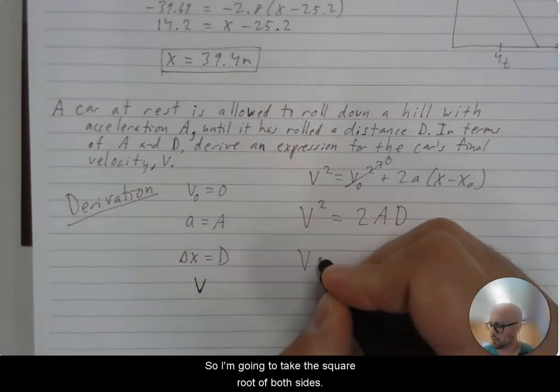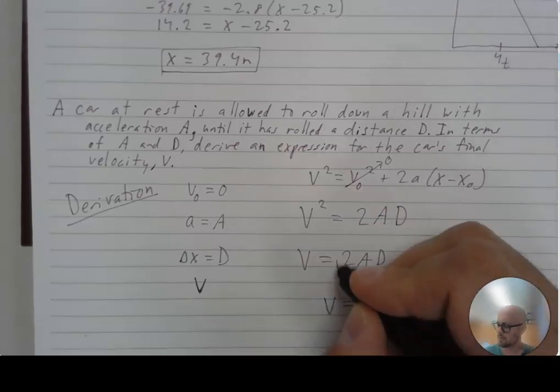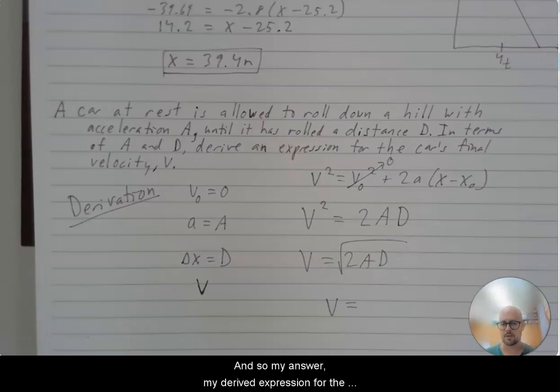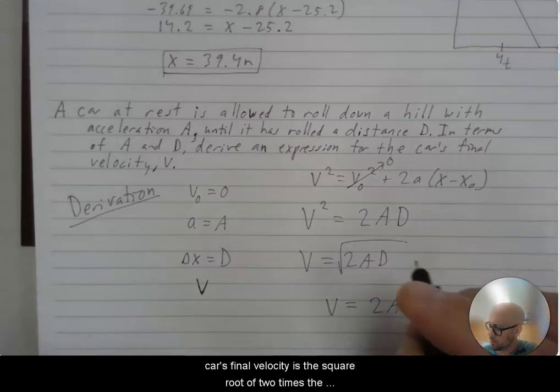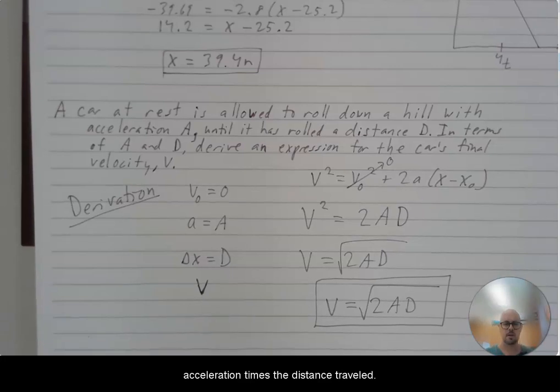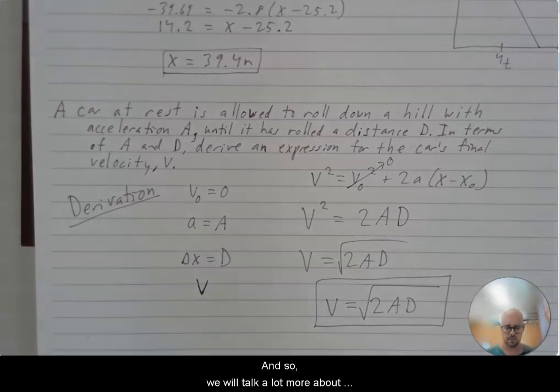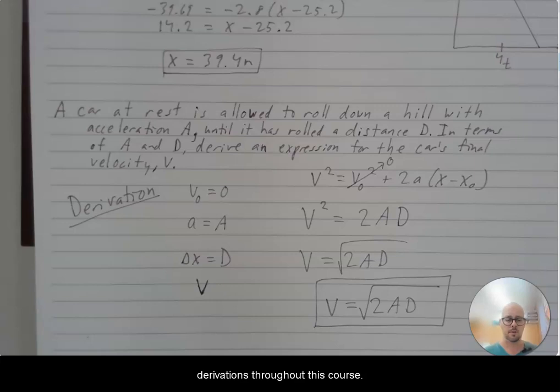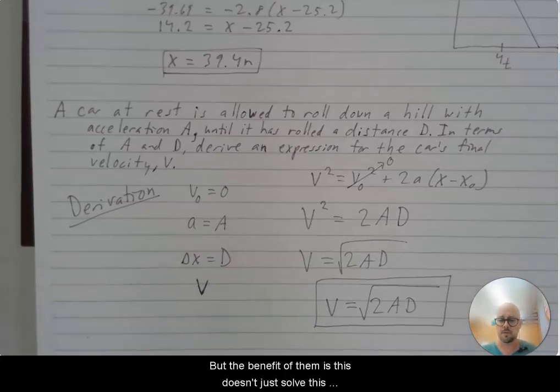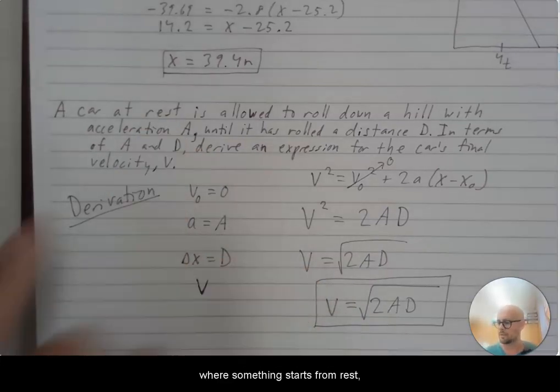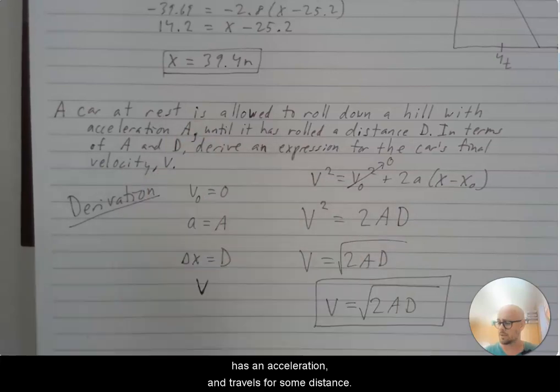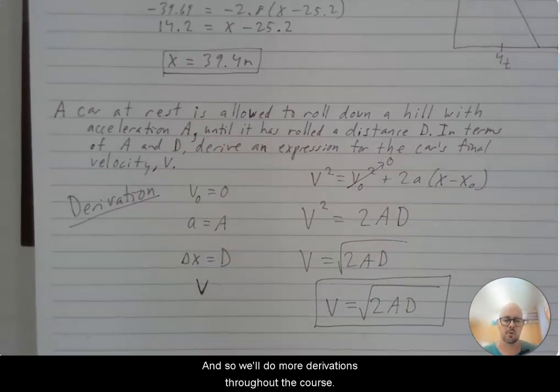So I'm going to take the square root of both sides. And so my answer, my derived expression for the car's final velocity is the square root of two times the acceleration times the distance traveled. And so we will talk a lot more about derivations throughout this course, but the benefit of them is this doesn't just solve this problem. This solves any problem where something starts from rest, has an acceleration, and travels for some distance.